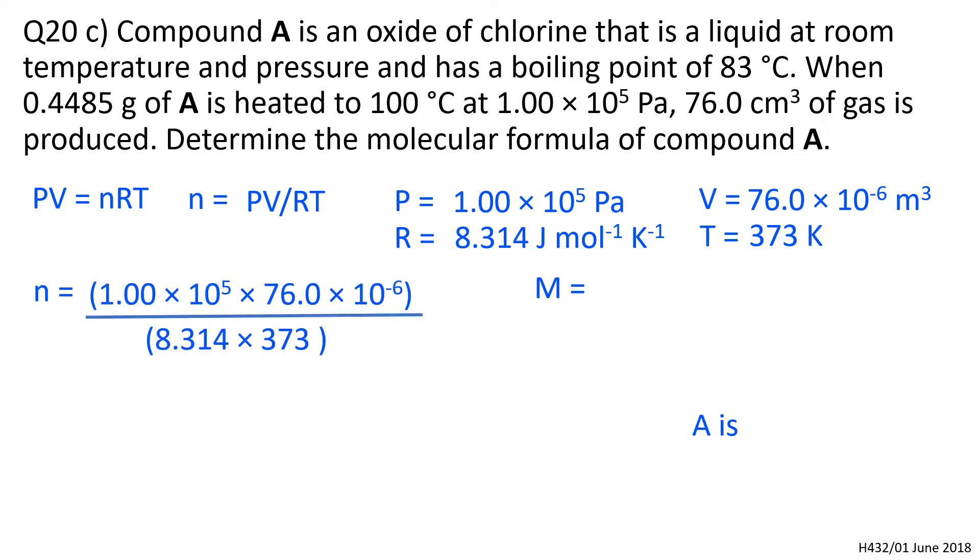Rearranging that equation, n is equal to PV over RT, which gives us a number of moles. Putting those values in gives us those values which are given there. PV over RT gives us that amount of substance in moles.